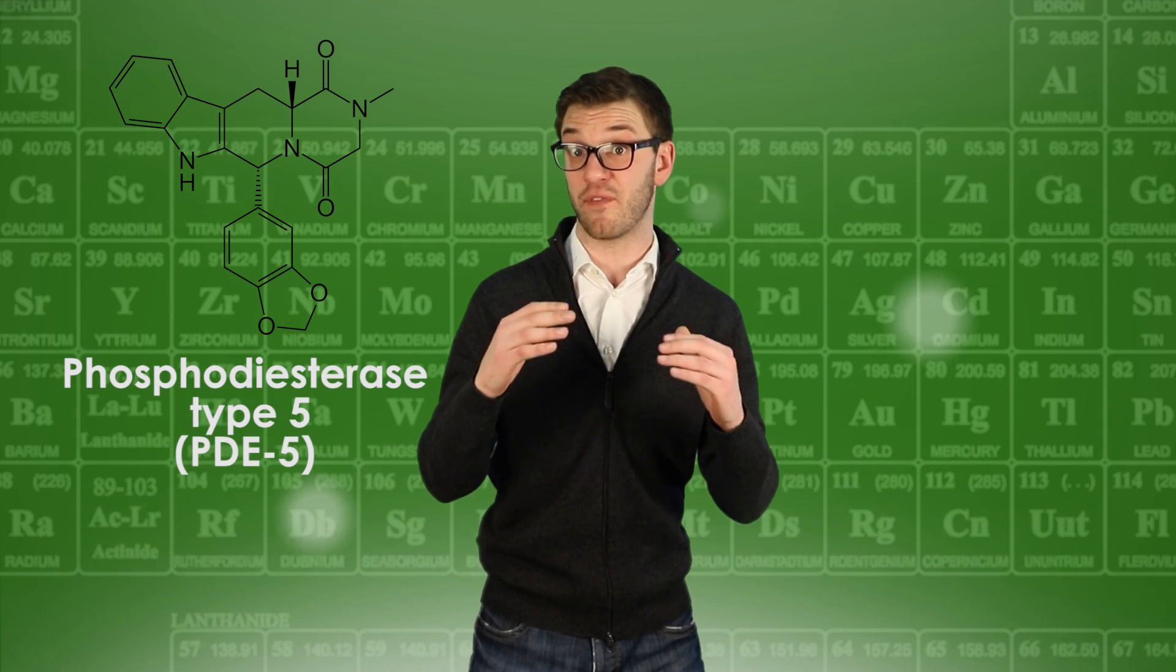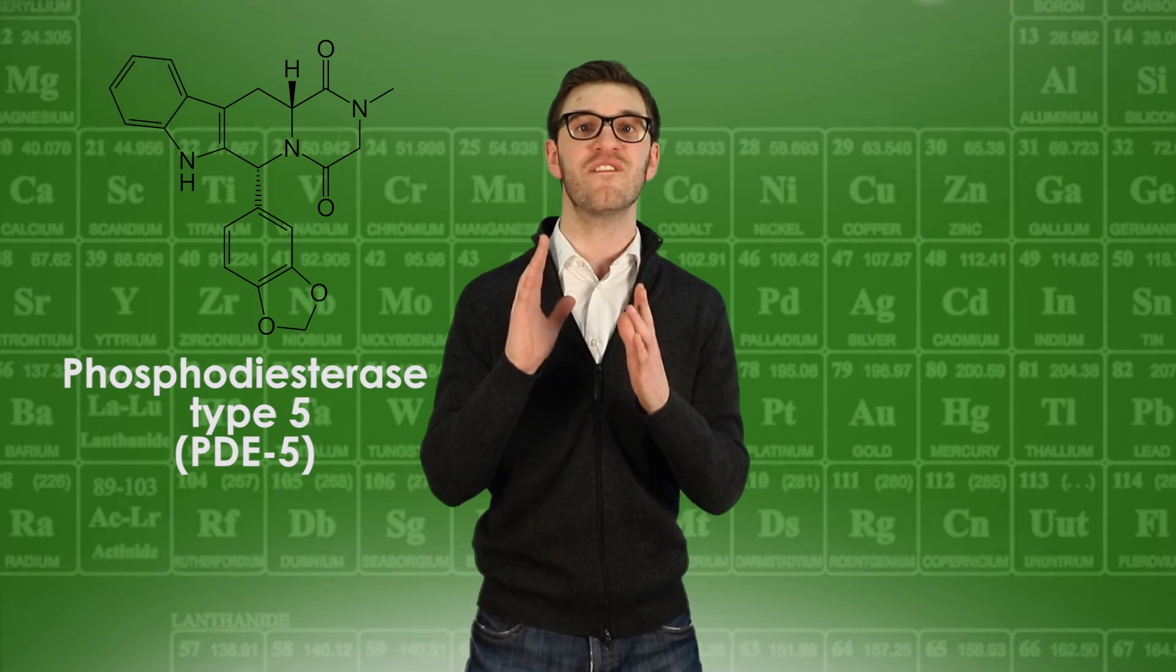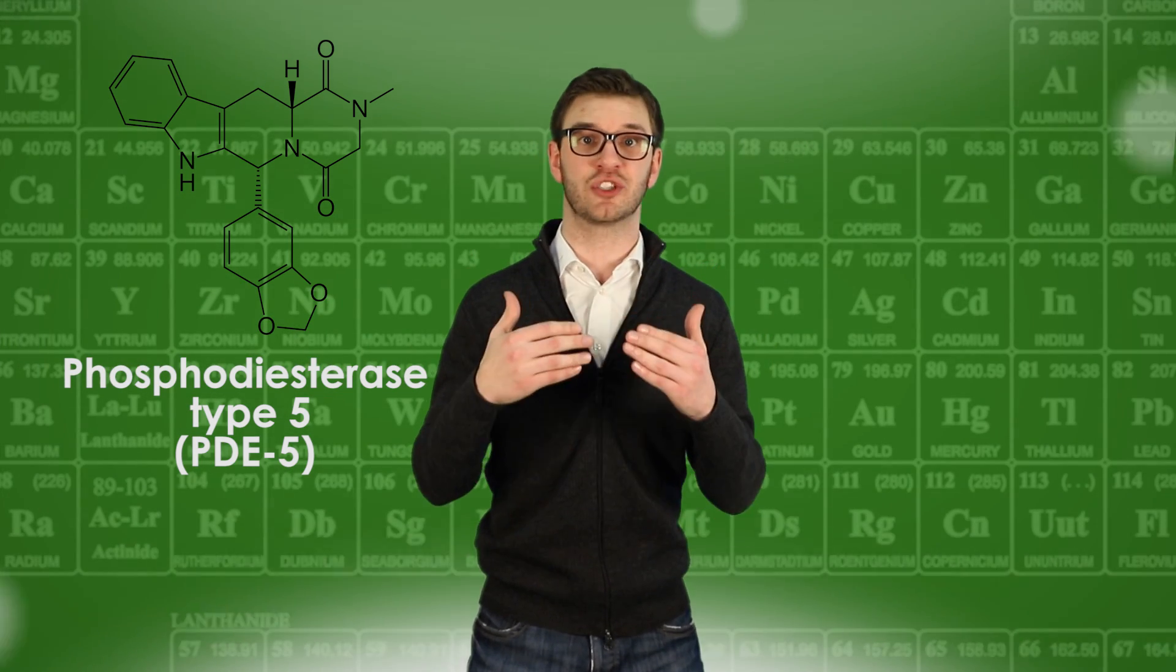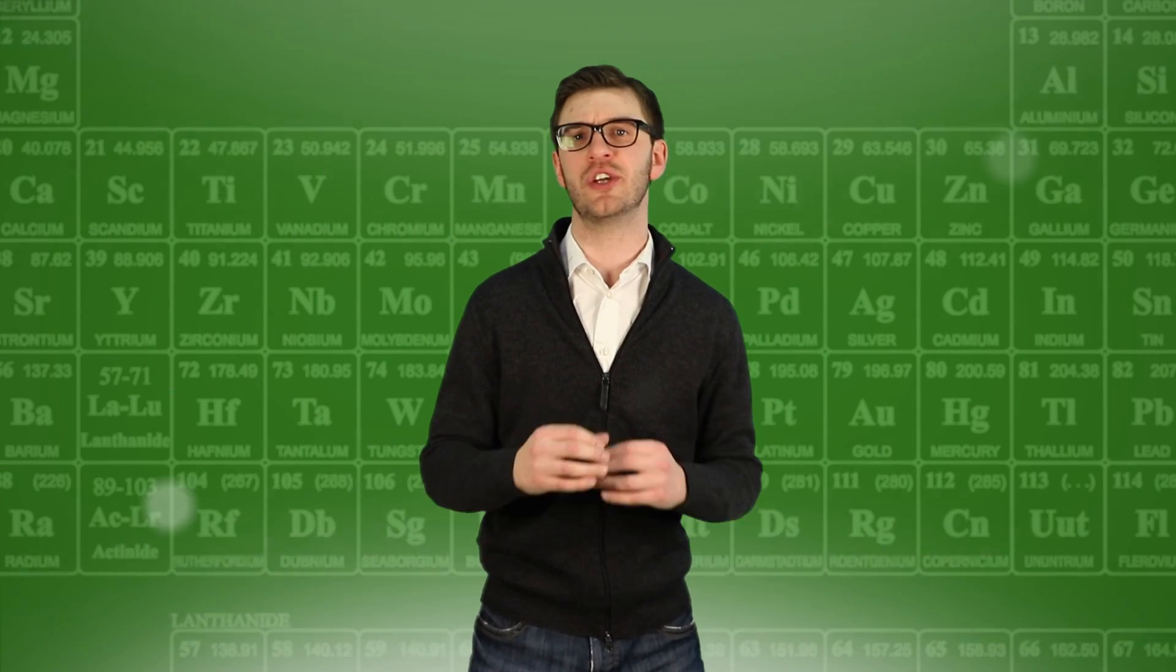Viagra stops an enzyme called PDE5, which is responsible for helping the muscles around the base of the penis to constrict. Without PDE5 doing what it does, the muscles relax and allow more blood to flow freely when you are in a sexually aroused state.